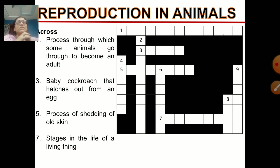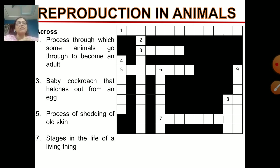First clue — across number 1: the process through which some animals go through to become an adult. Number 3: baby cockroach that hatches out from an egg. Number 5: process of shedding of old skin.